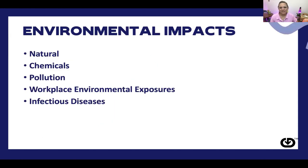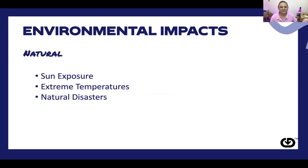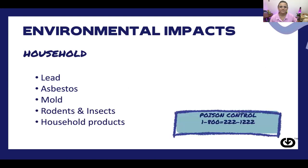Environmental impacts can be natural, chemical pollutants, workplace environmental exposures, and things like infectious diseases. Natural environmental impacts include sun exposure, extreme temperatures, and natural disasters. With climate change and global warming, we're seeing more and more extreme temperatures and natural disasters in our communities, and disaster preparedness is one aspect of community and public health.